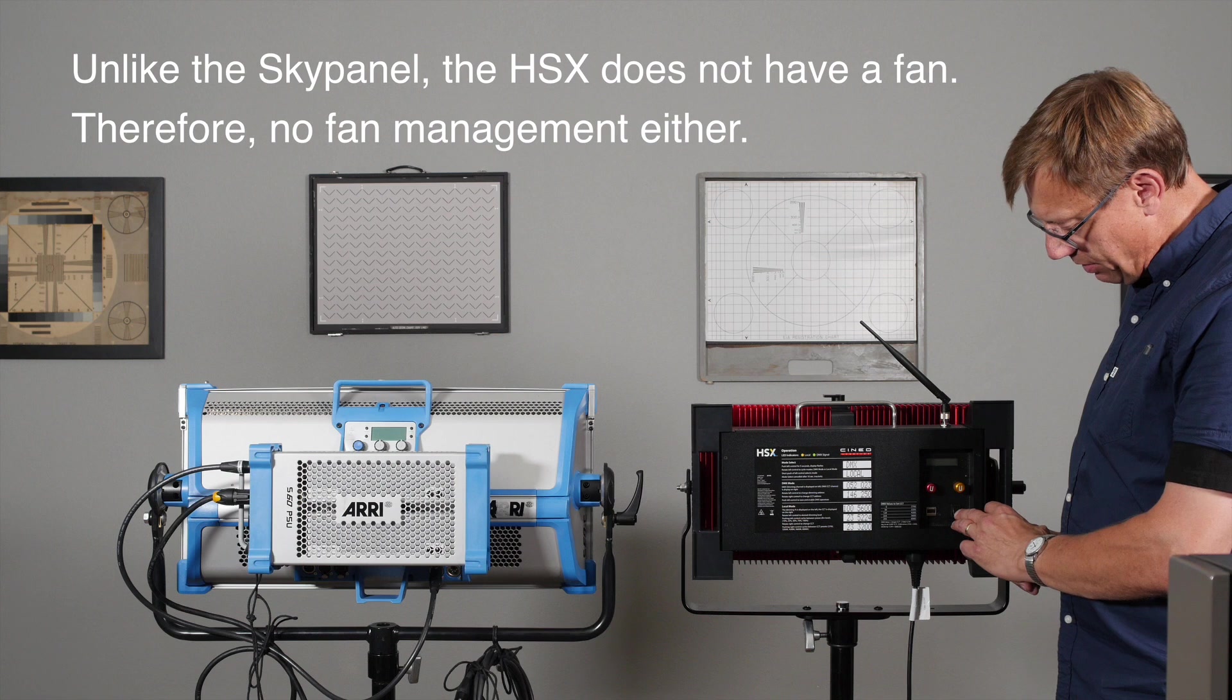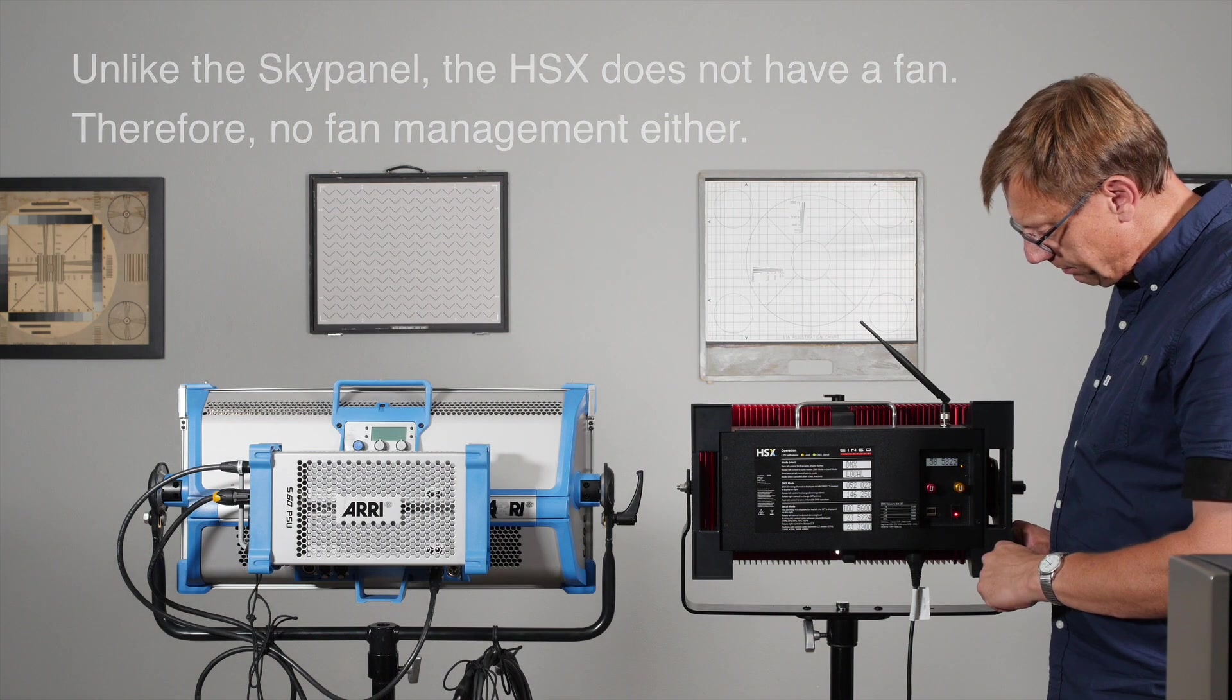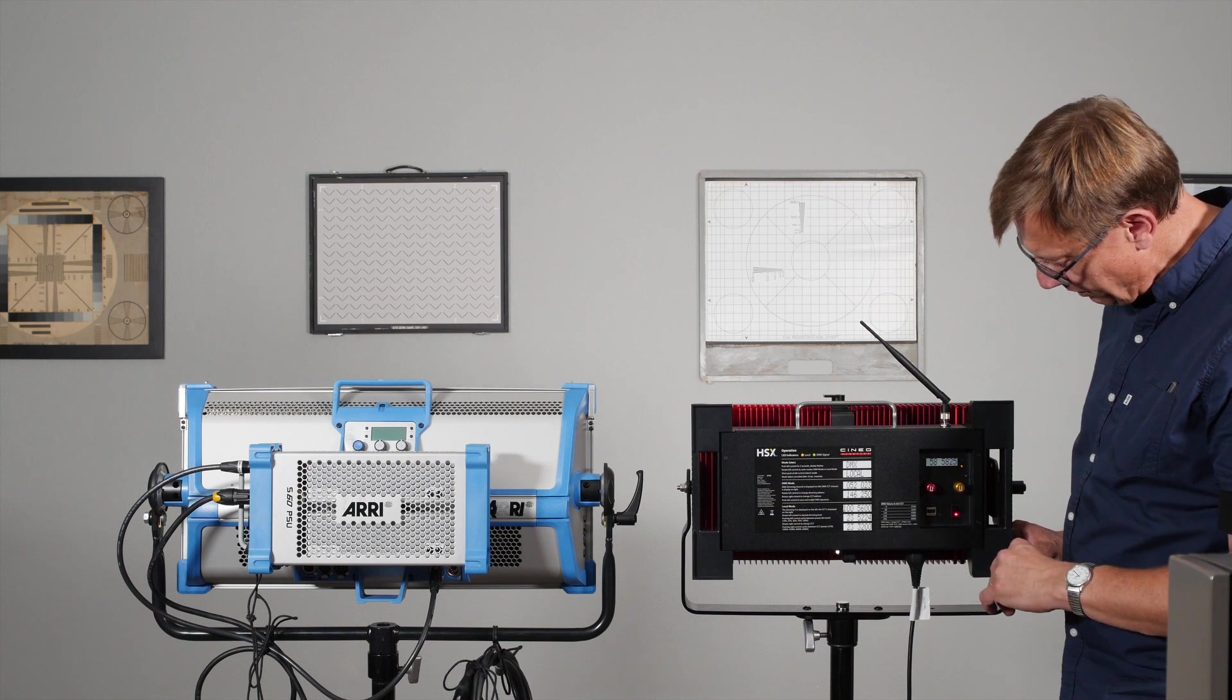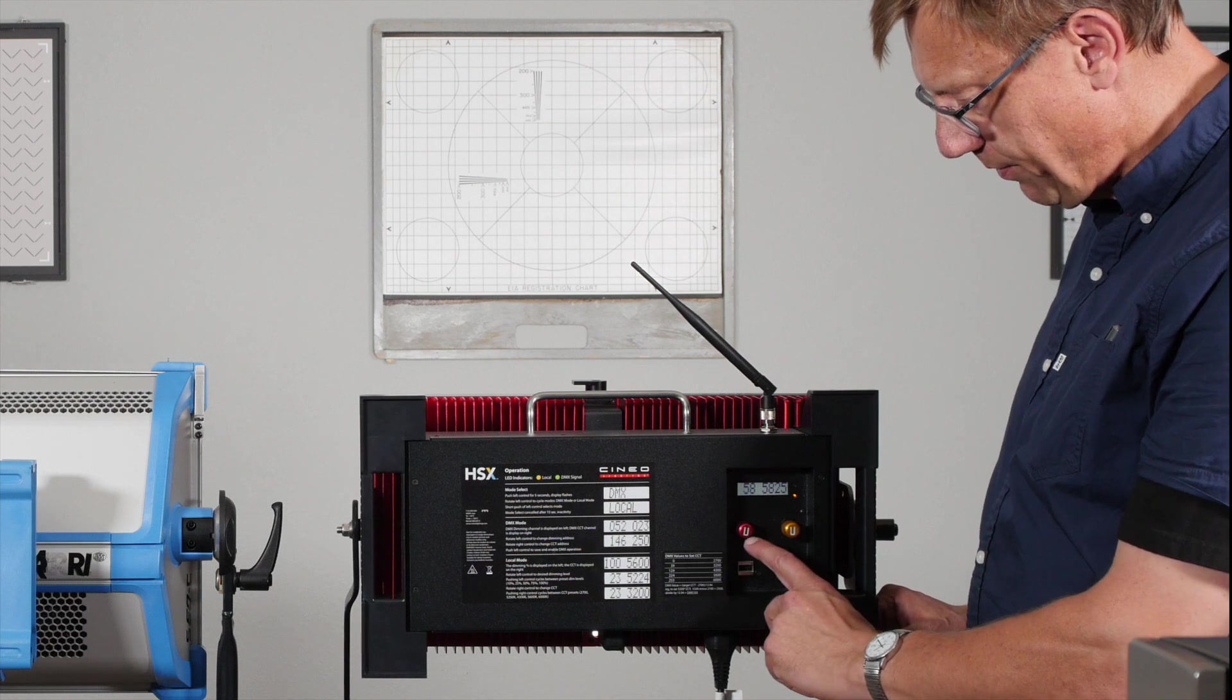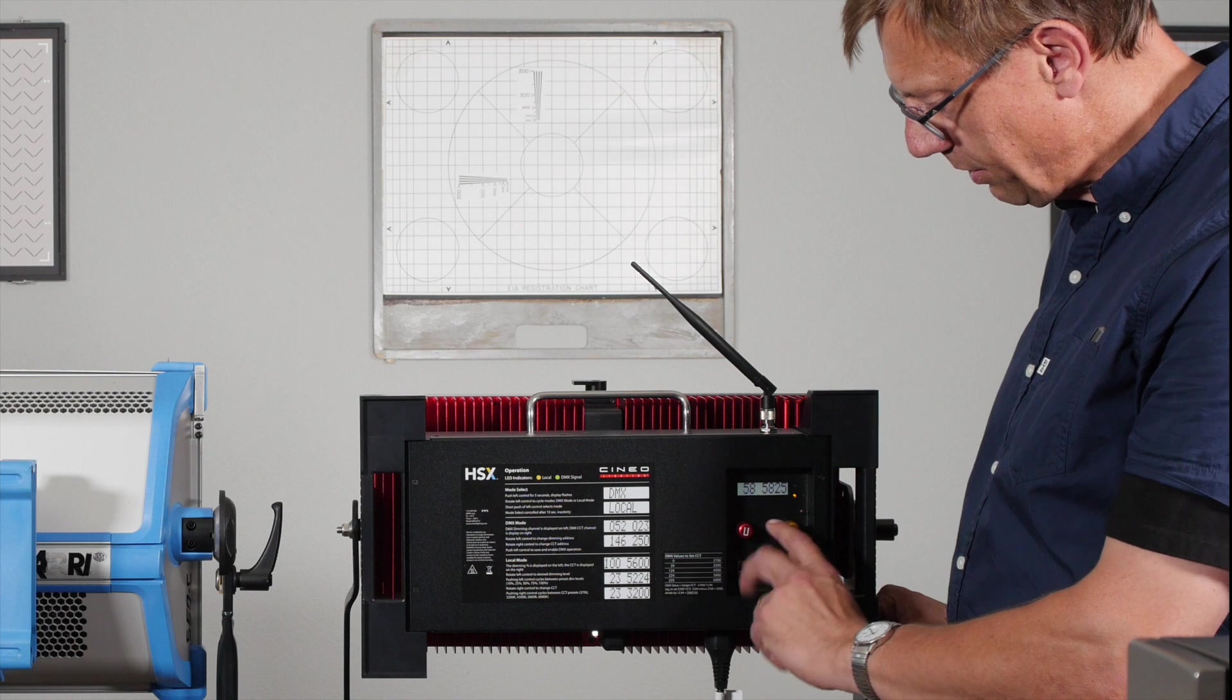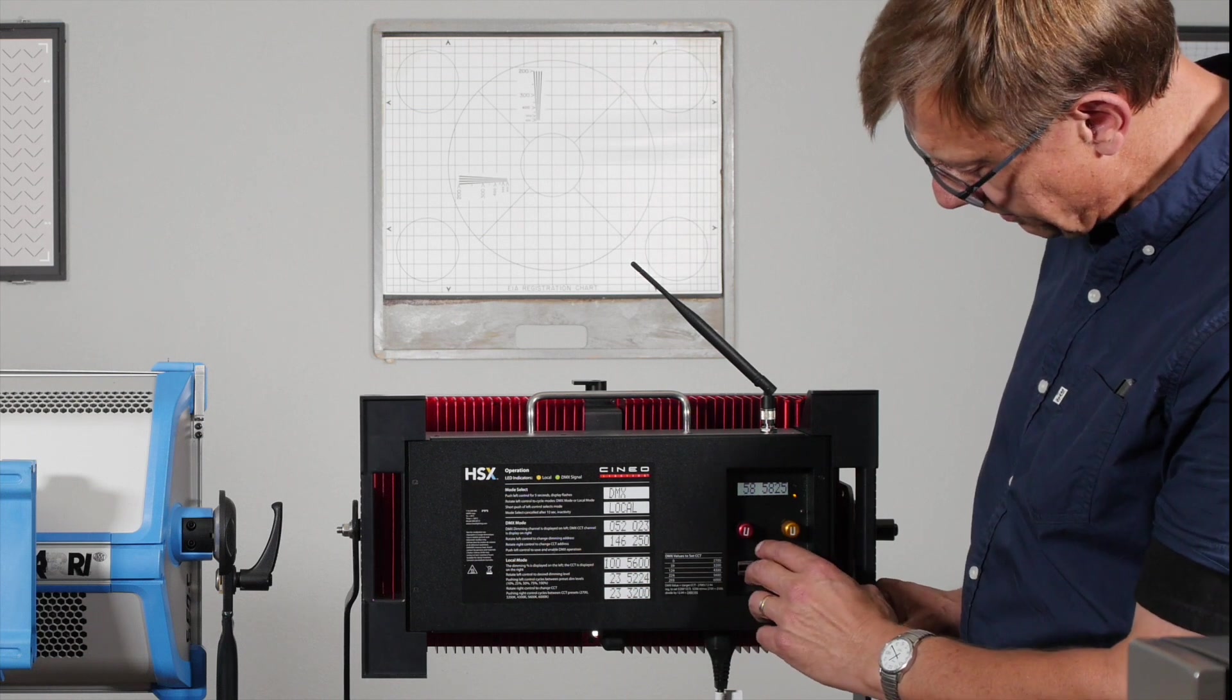So now I think we're just going to go ahead and turn it on and show you a few simple things in the way it's run. You've got two knobs - one for brightness and one for color temp. There's two ways of using these knobs.